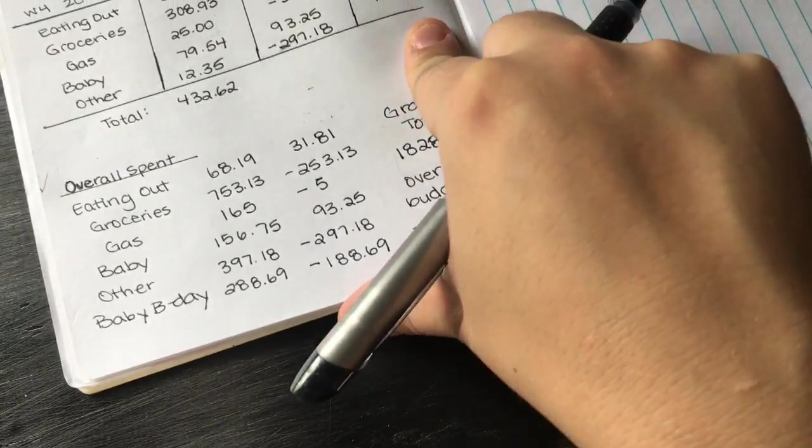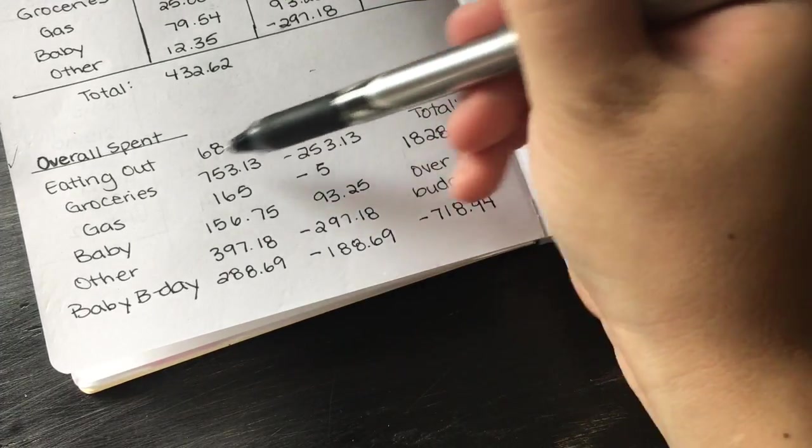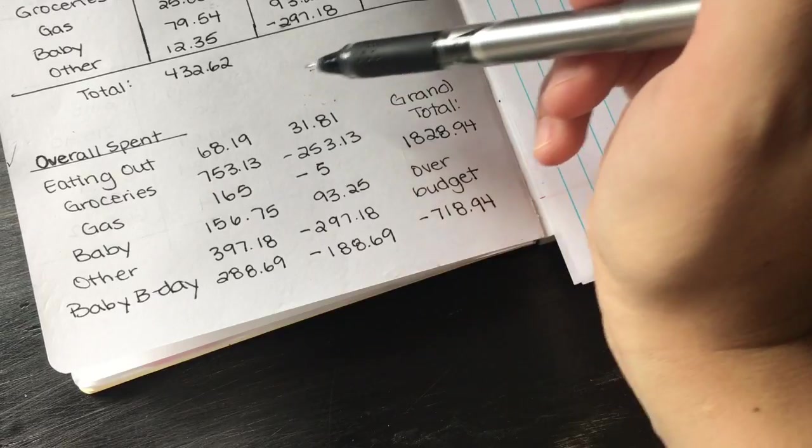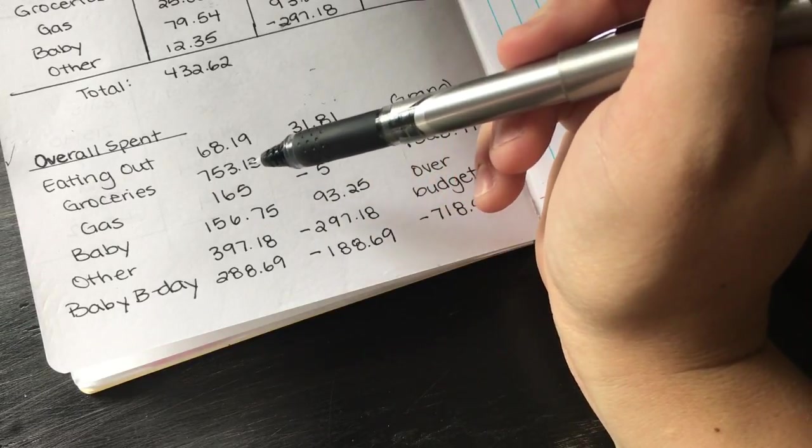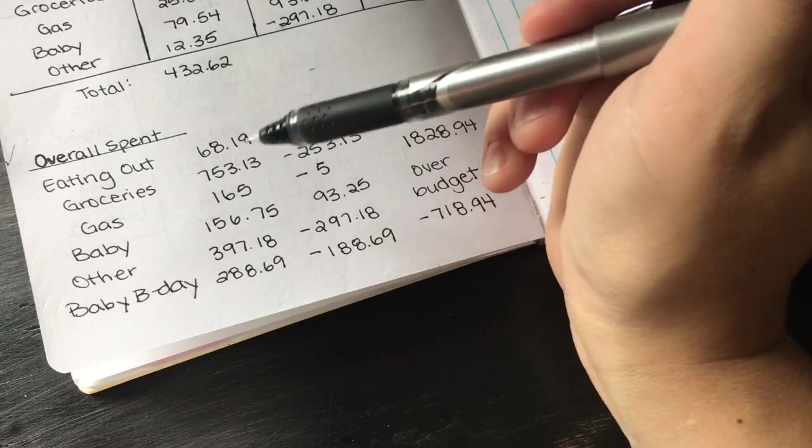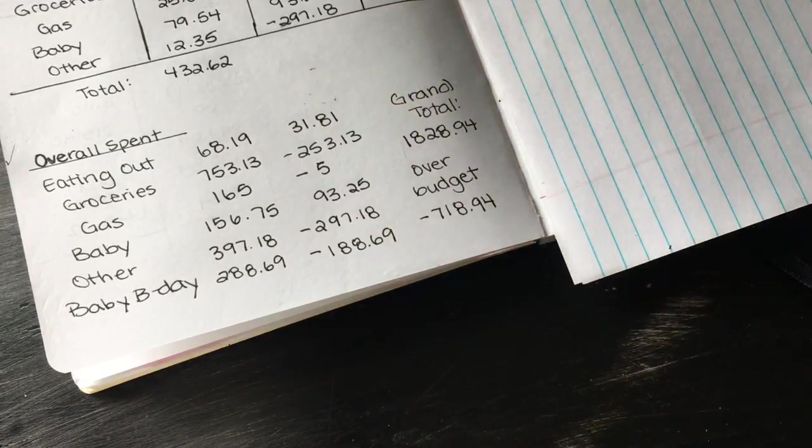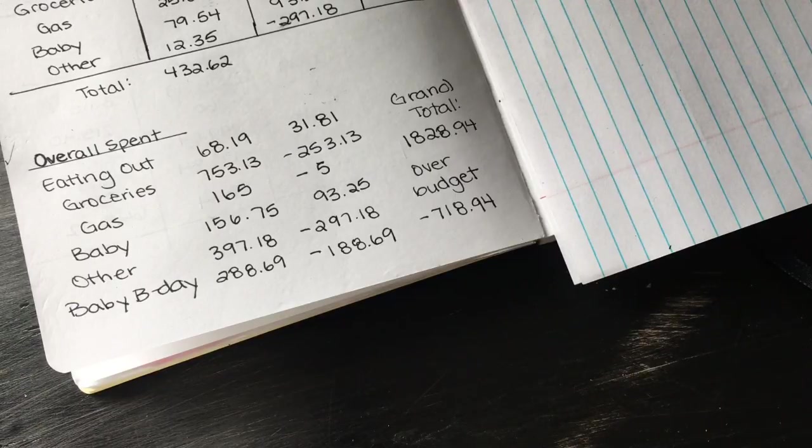Stuff happens. This kind of evens out the eating out and groceries because we were spending about $300 on eating out a month, and now we're spending $200 over budget on groceries, so it's kind of evening out. Other category was crazy. My husband had to do a huge oil change on his car that was needed.